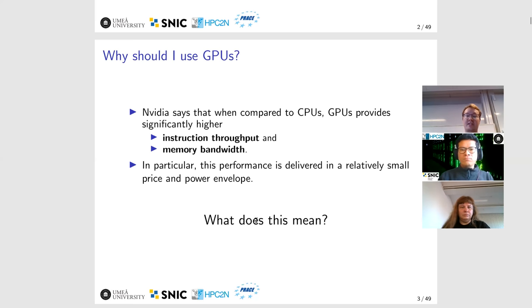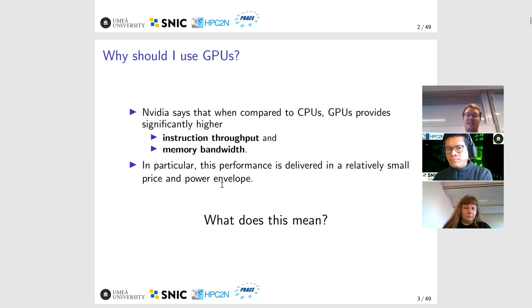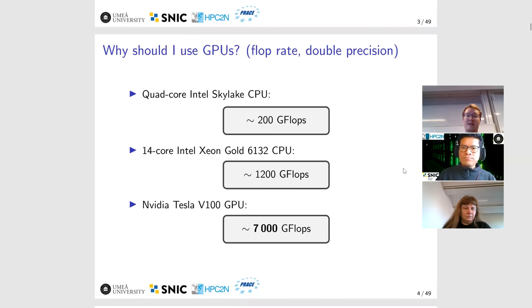Another question is what does this mean? What does NVIDIA mean when they say it's a higher instruction throughput and memory bandwidth, and what is this price and power envelope? So first, let's look at the instruction throughput, which is usually measured in terms of flops per second.